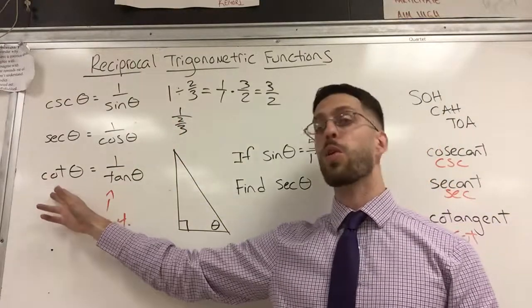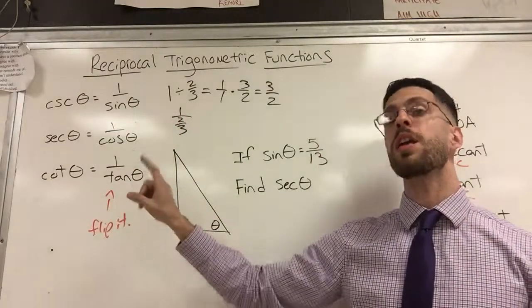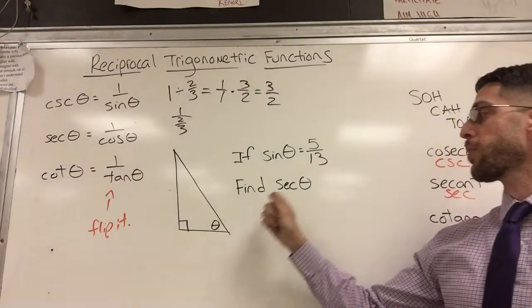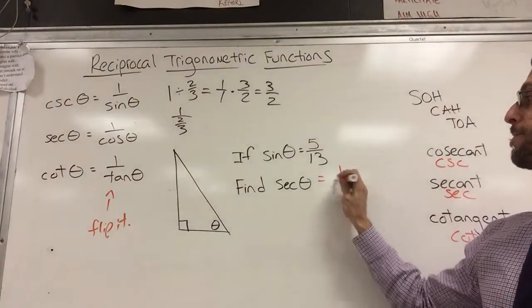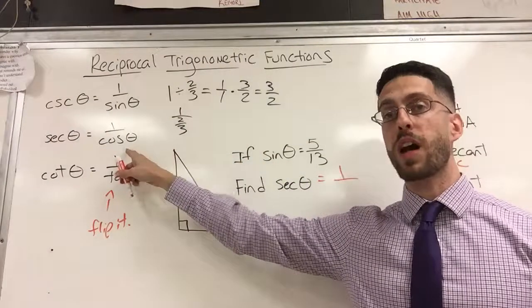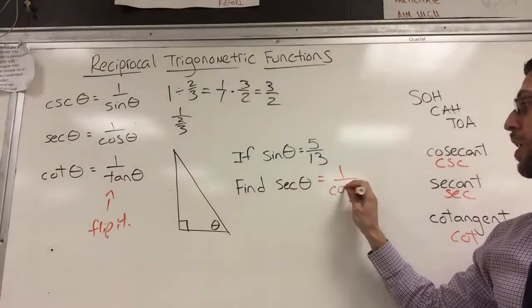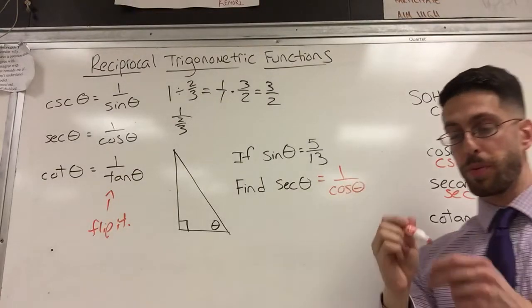If I were asking you for the cotangent, you would just need to know the tan and then just flip it. So for me to know the secant, I need to first know the cosine and then I'm going to flip it. Cosine theta and then flip it.